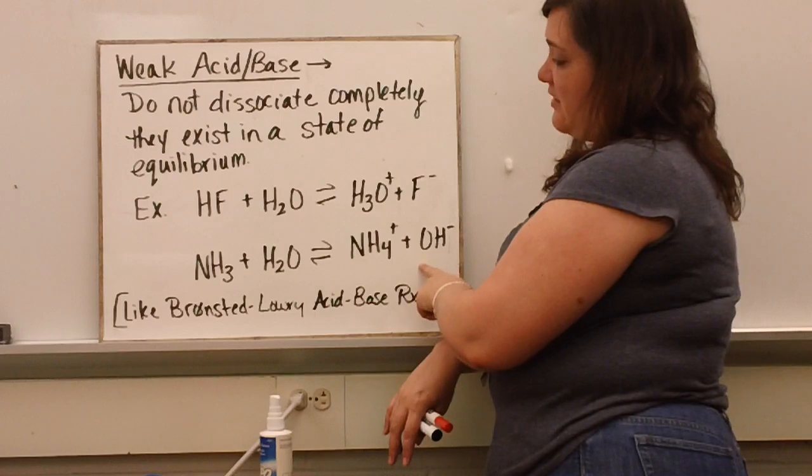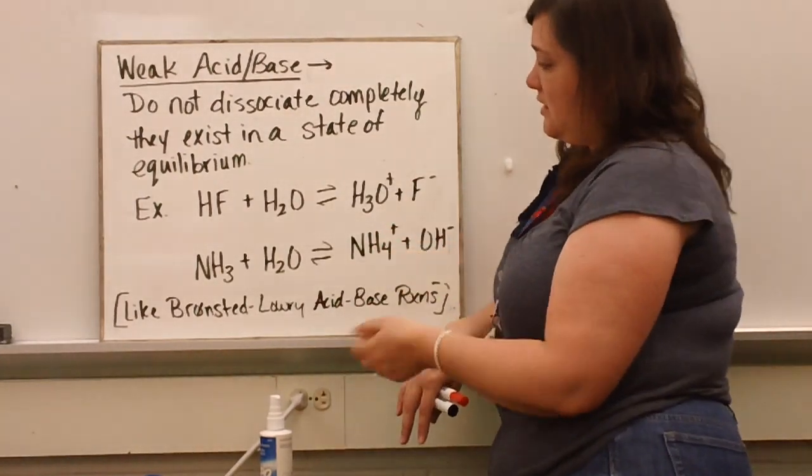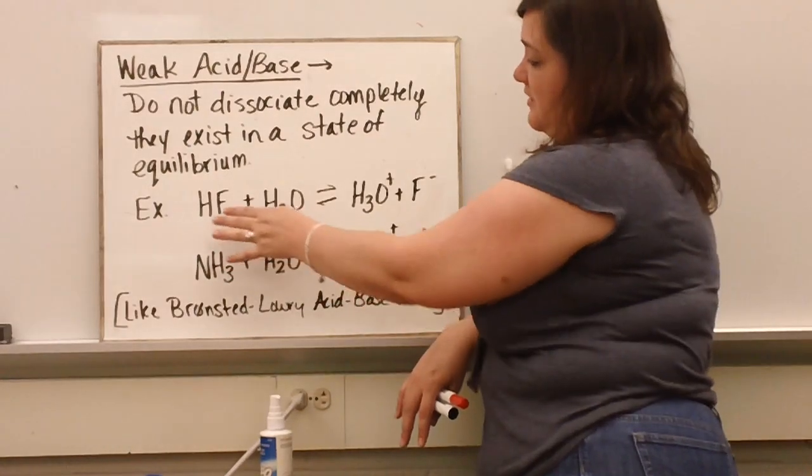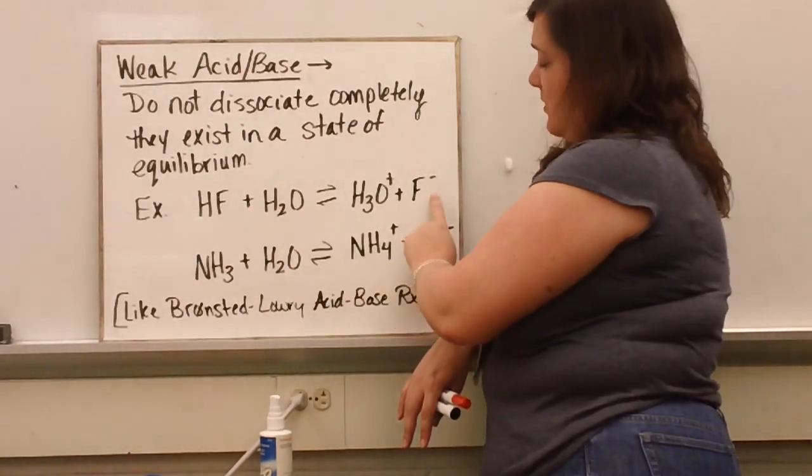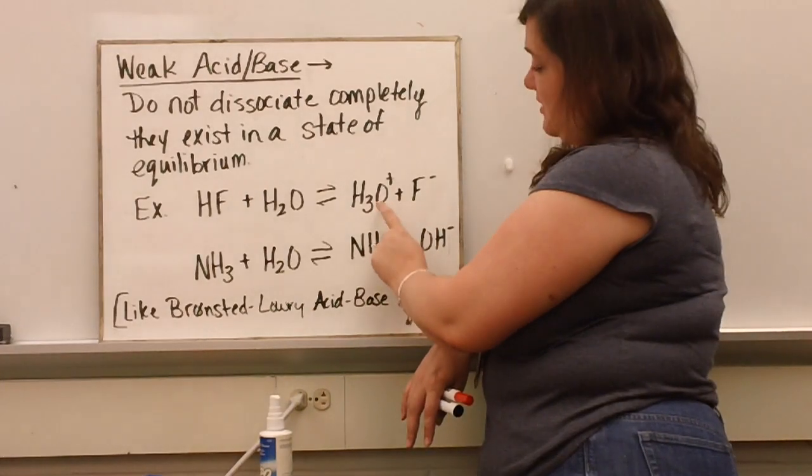All right, we saw equations like this in our first video on Bronsted-Lowry acids and bases. So basically, a weak acid gives its hydrogen to water and becomes a conjugate base, and then the water becomes a hydronium ion, which then is a conjugate acid.